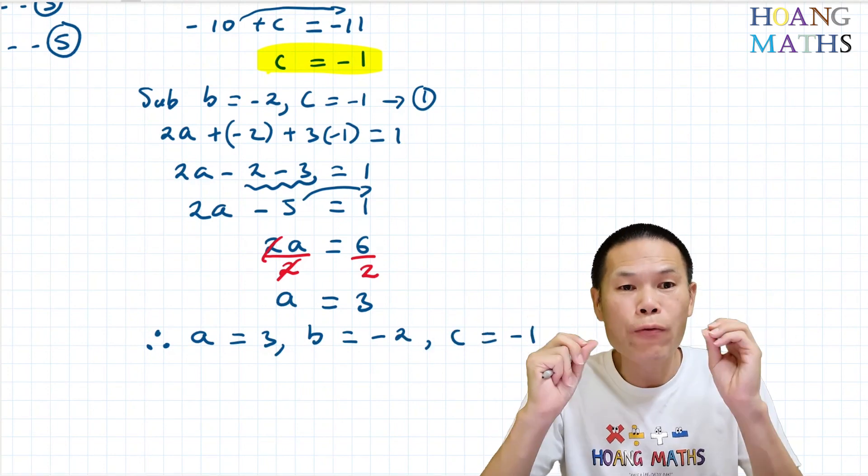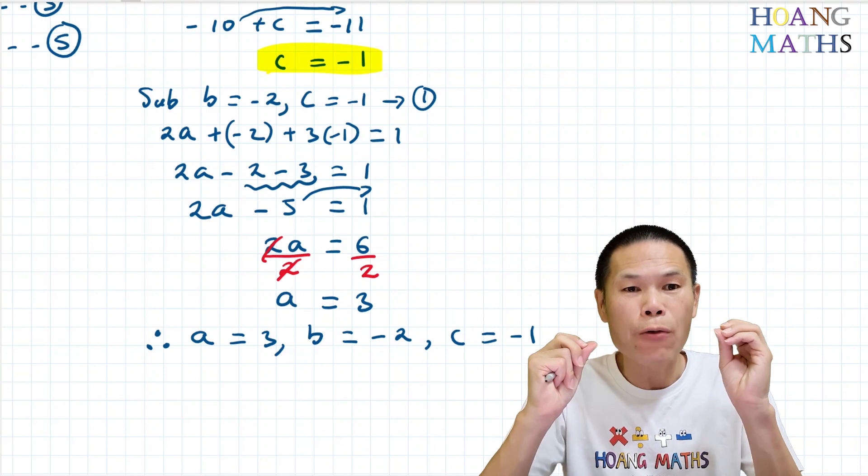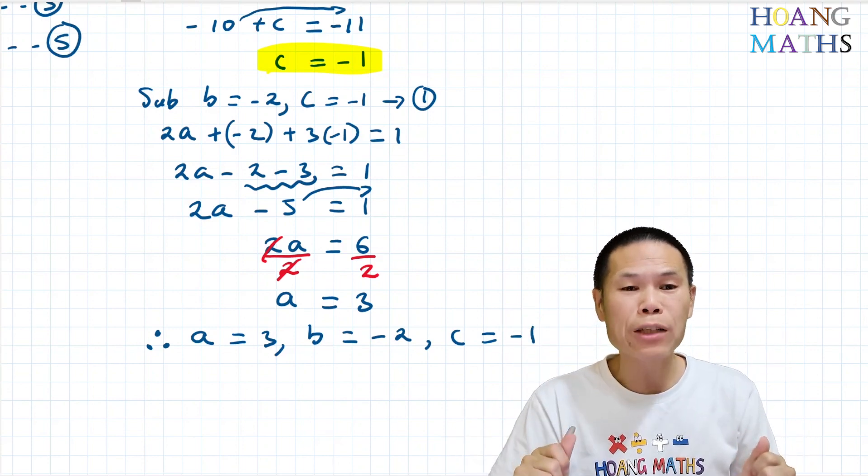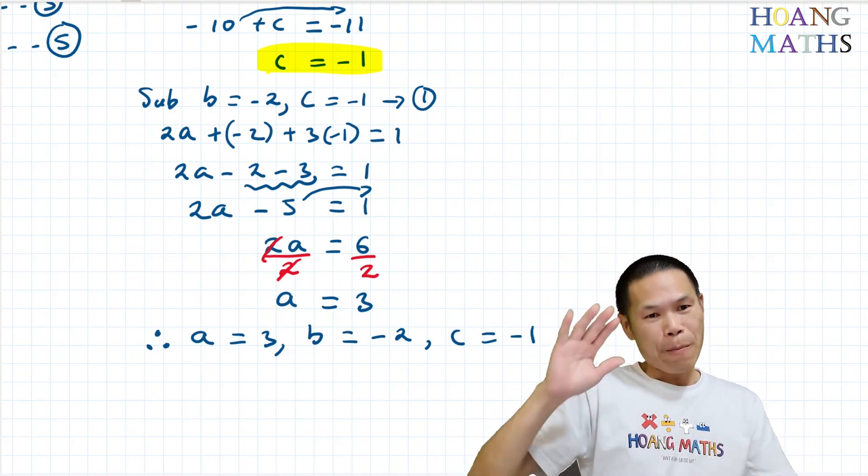Therefore, a equals three, b equals negative two, and c equals negative one. I hope you got all of them correct. Thank you so much for watching — bye!